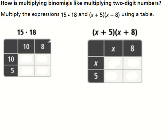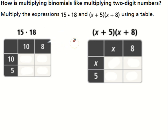So now we're going to look at multiplying a binomial by a binomial — two terms being multiplied by two terms, instead of just one multiplied by a bunch. This is very similar to multiplying whole numbers. If I were to do 15 times 18, a lot of people break this down — this is 8 times 15, and then 10 times 15. We can set that up in a table.